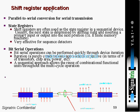Now coming to shift register applications. For parallel to serial conversion for serial transmission, we can use a shift register. Shift registers are often used as a state register in sequential devices. Usually the next state is determined by shifting right and inserting a primary input or output into the next position — so in FSM we will use these. They are also very effective for sequence detectors.